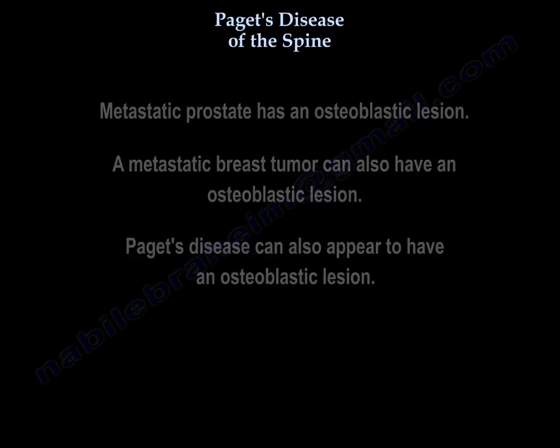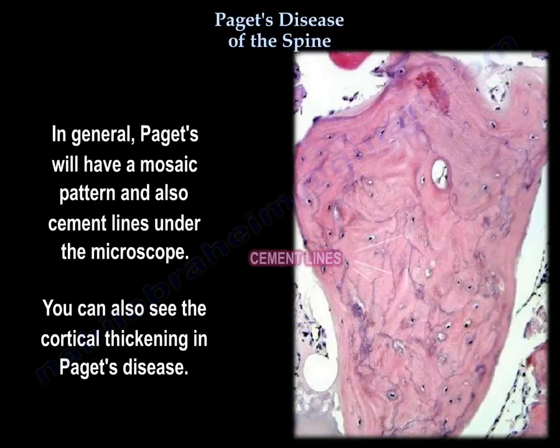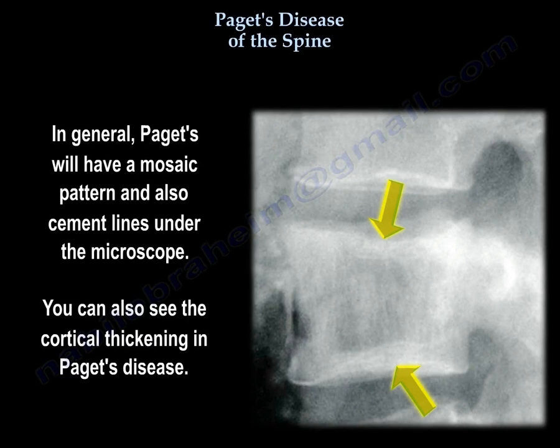In Paget's disease, there will be an increase in alkaline phosphatase, urinary hydroxyproline, and N-telopeptide. In general, Paget's will show a mosaic pattern and cement lines under the microscope. You can also see cortical thickening in Paget's disease.